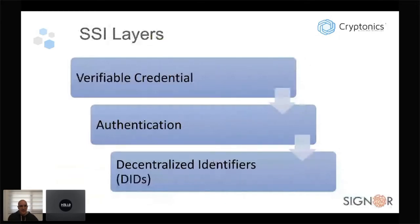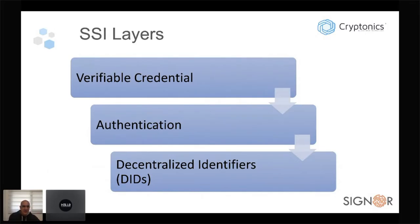The layers of self-sovereign identity are: decentralized identifiers (DIDs) at the base, then some way of authenticating ourselves on top of that, and then verifiable credentials that say something about ourselves. The order of these layers isn't entirely clear — an authentication credential is really a type of verifiable credential — but painting it in three layers is easy to understand.